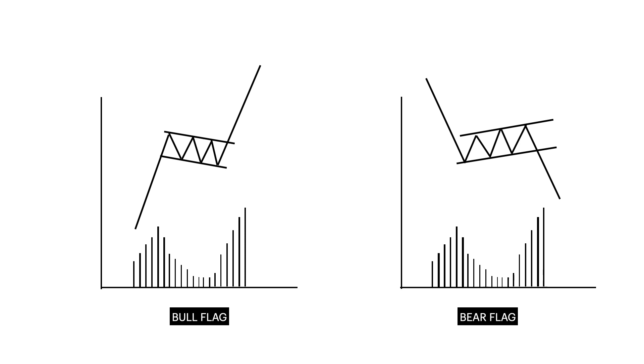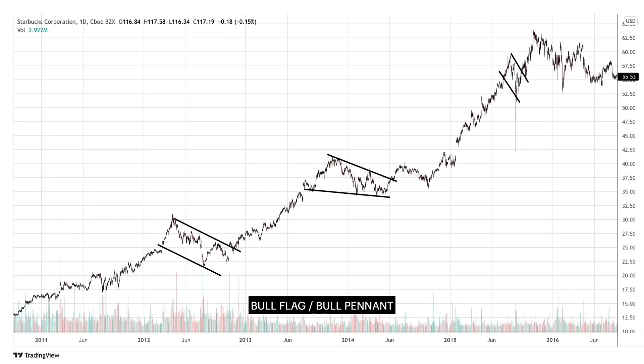Bull flags and bull pennants are bullish patterns within an uptrend. In contrast, bear flags and pennants are bearish patterns within a downtrend. The stock price chart of Starbucks Corporation shows flags and pennants within an uptrend. On completion of these flags and pennants, we see strong price movements upward which are called poles.